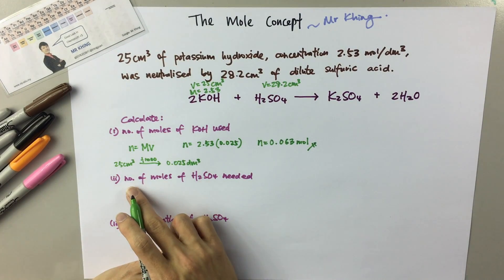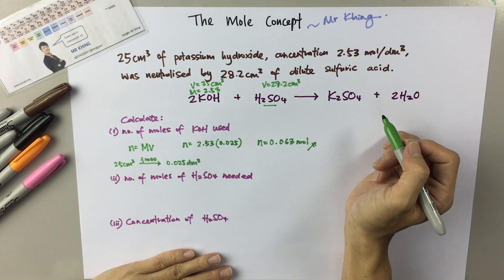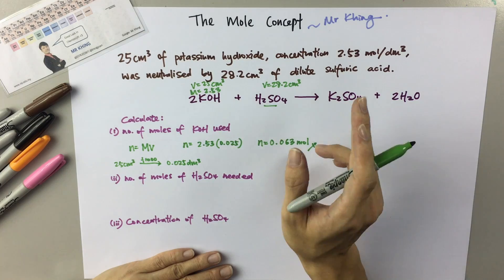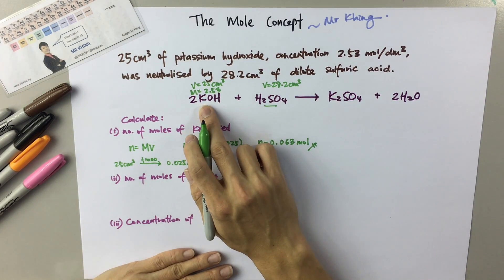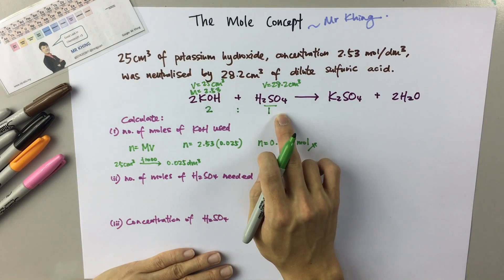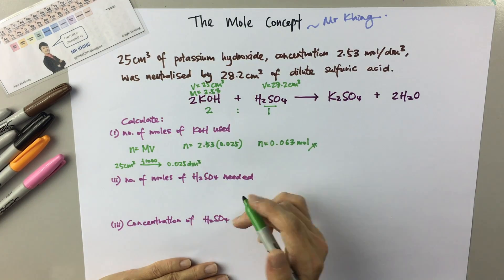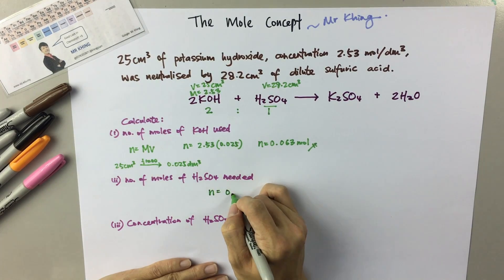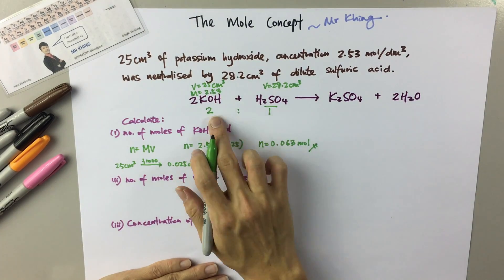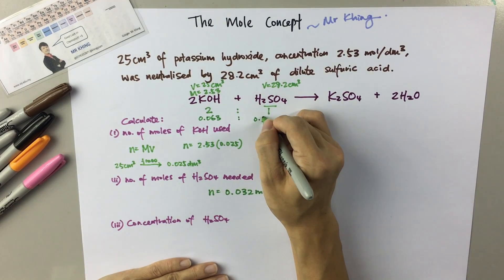Then they ask for the number of moles of H₂SO₄. Once you get the number of moles of one compound in an equation, you can look for the number of moles of others using the ratio. What is the ratio of potassium hydroxide to sulfuric acid? Based on the equation, it is 2 to 1. So the number of moles of sulfuric acid equals the number of moles of potassium hydroxide divided by 2. That gives 0.063 divided by 2, which is 0.032 moles.